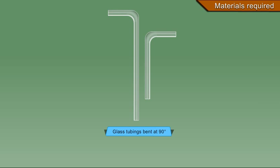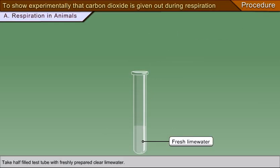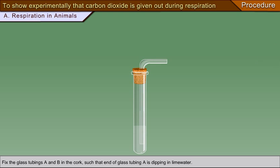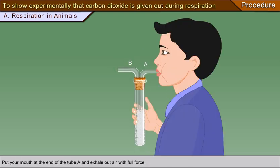Procedure: Take a half-filled test tube with freshly prepared clear lime water. Fix the cork in the mouth of the test tube. Fix the glass tubings A and B in the cork such that the end of glass tubing A is dipping in lime water. Put your mouth at the end of tube A and exhale out air with full force.